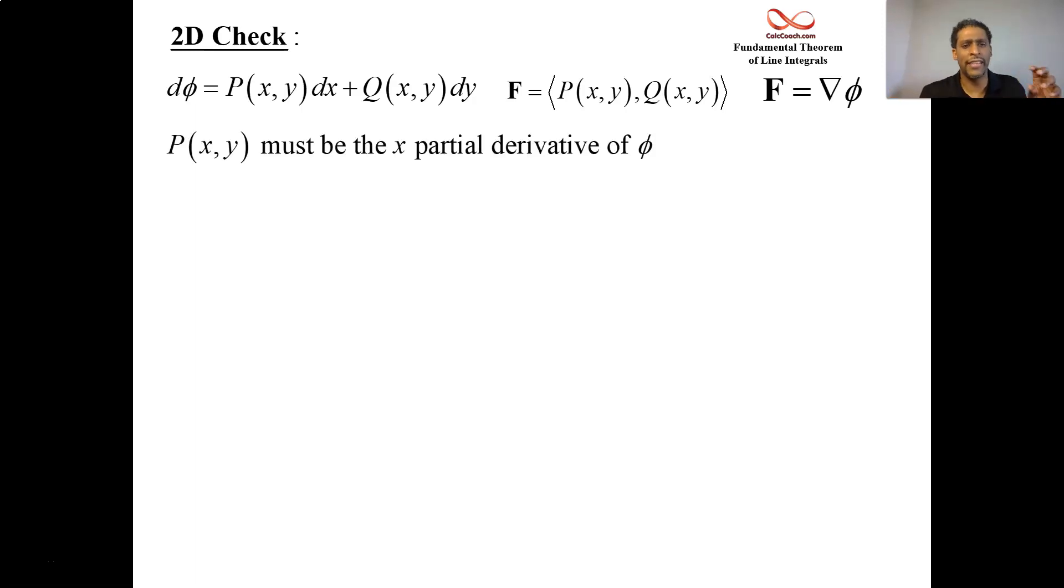When you're in two dimensions where you just have an i and j component, then if this is going to be true, if the inside of the integral is going to be the differential, then f will be the gradient of phi. Now, when it's set up this way, if it is going to be true, then the i component of f is the x partial of phi and the j component of f is the y partial of phi. So p should be equal to phi sub x and q should be equal to phi sub y.